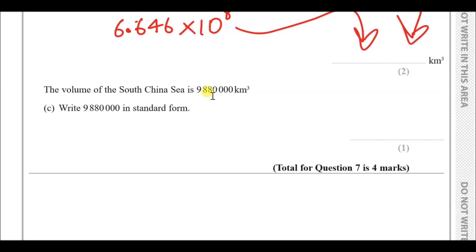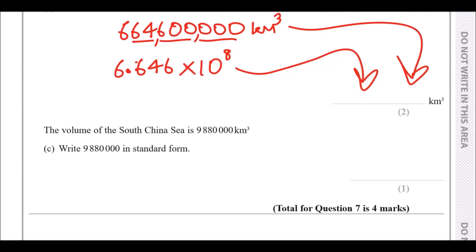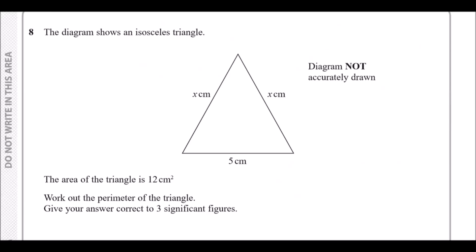Part c: the volume of the South China Sea is 9,880,000 km³ — write this in standard form. Copy the first digit: 9, then decimal point and the digits 8, 8, giving 9.88. Then ×10 to the power — count the digits after the 9, which gives six, so the answer is 9.88 × 10⁶.